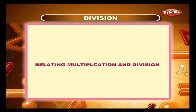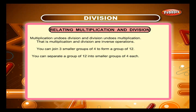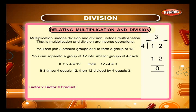Relating multiplication and division. Multiplication undoes division and division undoes multiplication. That is, multiplication and division are inverse operations. You can join 3 smaller groups of 4 to form a group of 12. You can separate a group of 12 into smaller groups of 4 each. If 3 times 4 is equal to 12, then 12 divided by 4 is equal to 3. Factor times factor is equal to product. Dividend divided by divisor is equal to quotient.